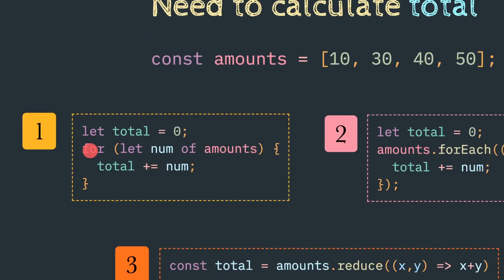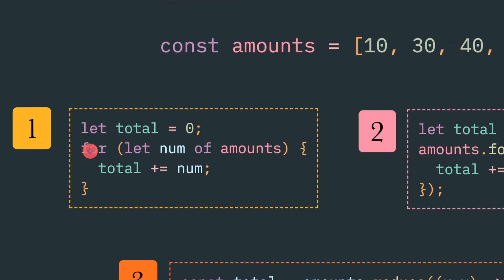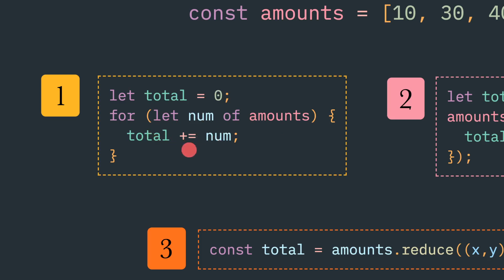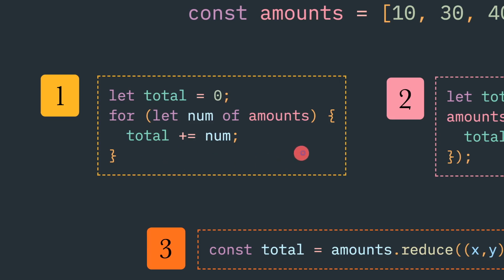Let's start with the first one. This is like a traditional for-of loop. You initialize the total variable with zero and iterate through the array amounts, doing summation with the total using the plus-equal operation. After this for loop, the total will contain the addition of these numbers.